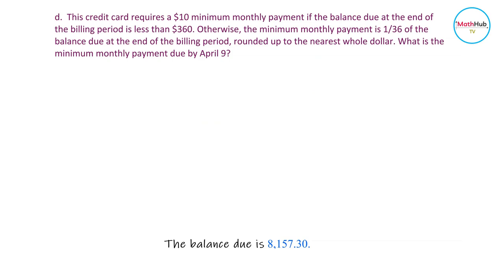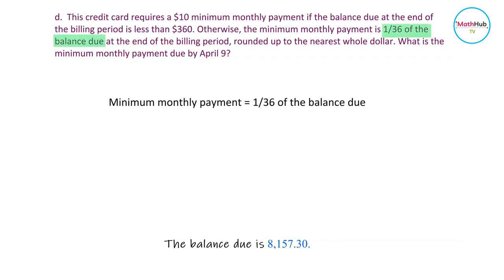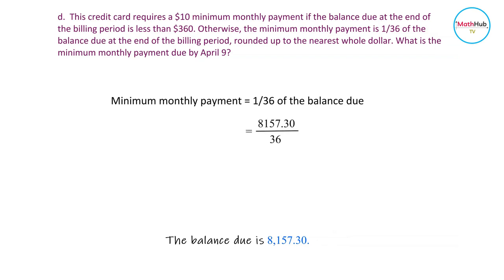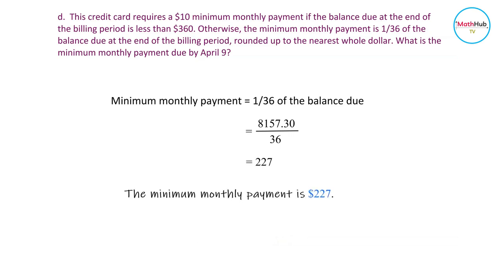Lastly, we want to find the minimum monthly payment due by April 9th. This credit card requires a $10 minimum monthly payment if the balance due is less than $360. In this case the unpaid balance due is more than $360, so we take 1 over 36 of the balance due and round to the nearest whole dollar. The balance due is 8,157.30, so the minimum payment is 8,157.30 divided by 36, which is approximately equal to $227.